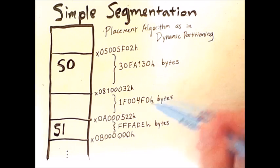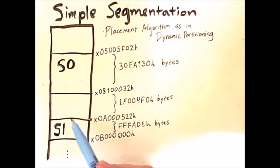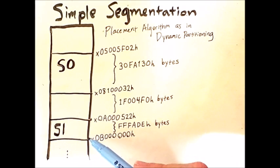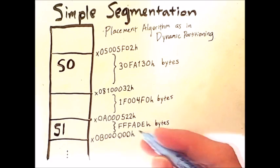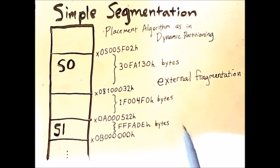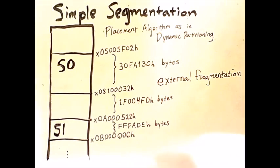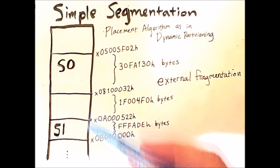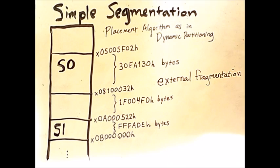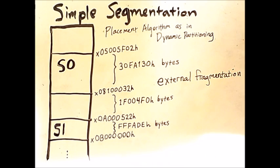Because we have empty regions of memory between segments, we have external fragmentation. Segmentation will have external fragmentation because the segments can have arbitrary size and may not always fit precisely in empty regions of memory. There will never be internal fragmentation, however, because the size of the segment matches the size of the request.